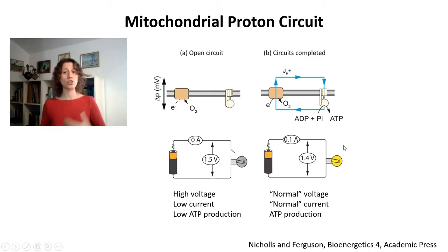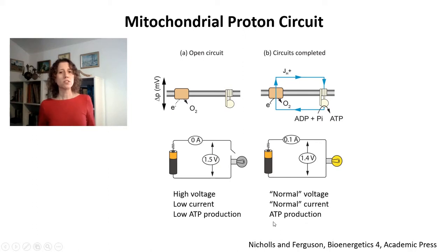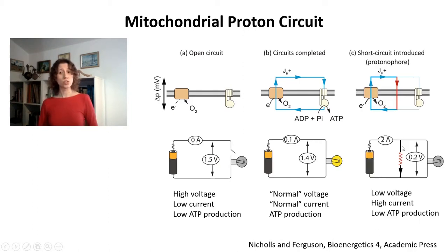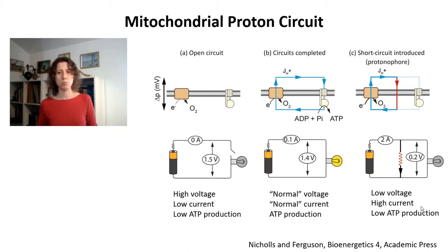Another situation is one in which you actually have a functional ATP synthase — your light bulb is on. This is going to use some energy, so you're going to have a slightly lower but pretty normal voltage, and this is going to allow for electron transport coupled to generating this membrane potential. You're going to have normal current and ATP production. Finally, you can short circuit this system by allowing protons to re-enter the mitochondrial matrix through a pathway that's not ATP synthase. This decreases the voltage and increases electron transport a lot, but you have no ATP production because you don't have proton motive force.